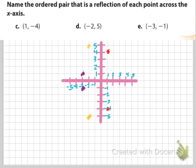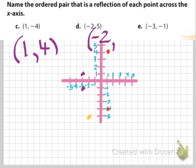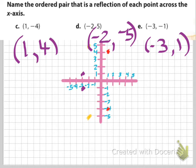So to summarize: if it's a reflection across the x-axis, the x stays the same and the y is the opposite. Across the x-axis — x stays the same, y is the opposite.